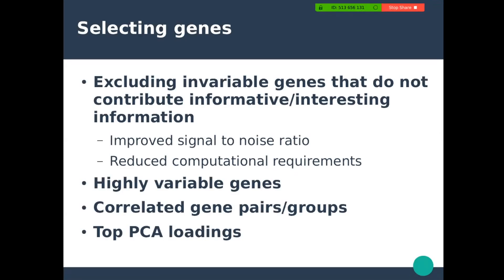Usually the next step before doing principal component analysis or clustering is selecting interesting genes. You want to exclude genes that are invariably expressed because they won't give you any interesting information. Doing this can improve the signal-to-noise ratio and make statistics and computations easier. This can be done with many different methods. One popular group is selecting HVGs — highly variable genes. You can also look at gene correlations, or do the PCA and then choose the top genes from the principal components.